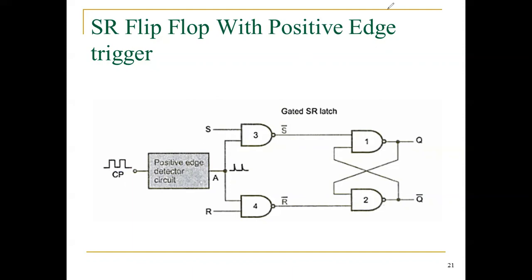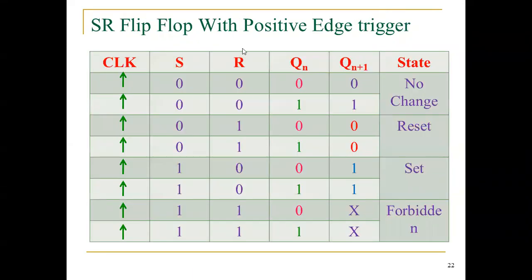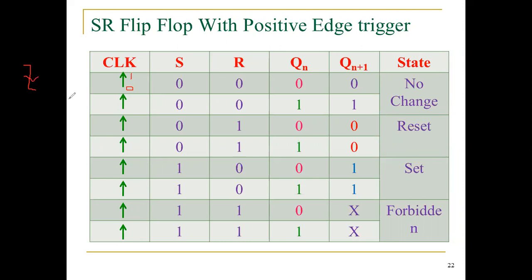Clock pulses are given, and at the time of zero-to-one transition only, the circuit changes states. Now we look at the truth table of the SR flip-flop with positive edge triggering. Positive edge triggering is shown by an up-arrow (zero-to-one transition). For negative edge triggering, it would be a down-arrow (one-to-zero transition). The SR inputs can be 0-0, 0-1, 1-0, or 1-1.